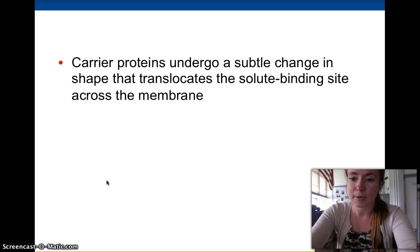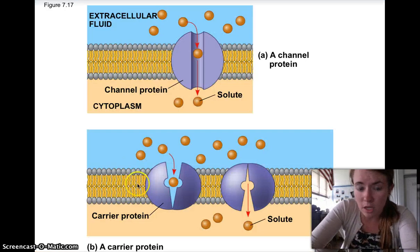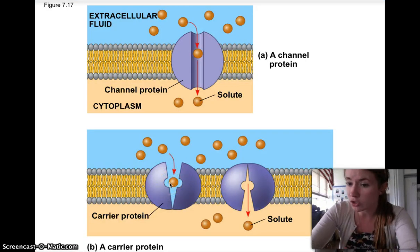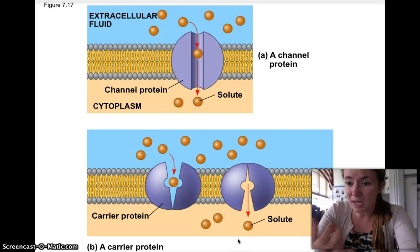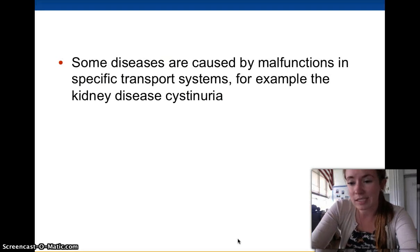Carrier proteins undergo a subtle change in shape that translocates — moves — the solute binding site across the membrane. The solute binding site is open to one side of the membrane, then they undergo a change in structure, and now the solute binding site is open to the other side. They're basically picking something up and moving it across without requiring any energy. Some diseases can be caused by malfunctions in this process.